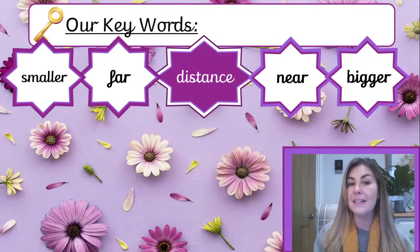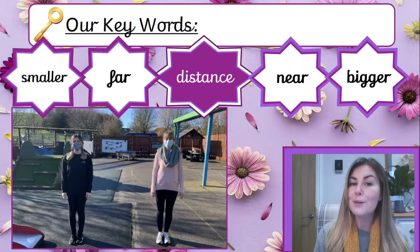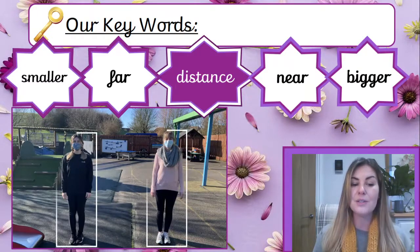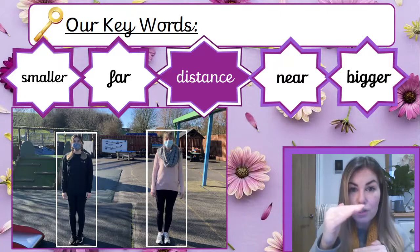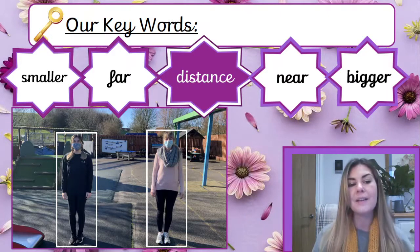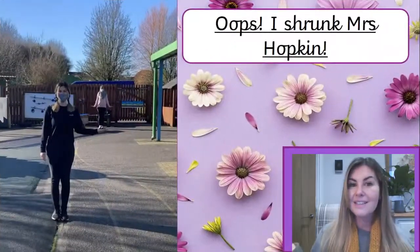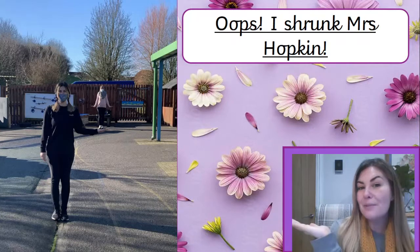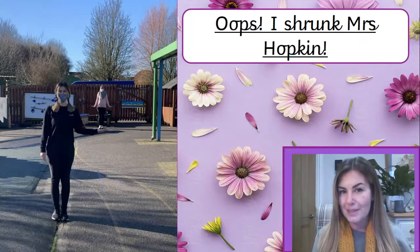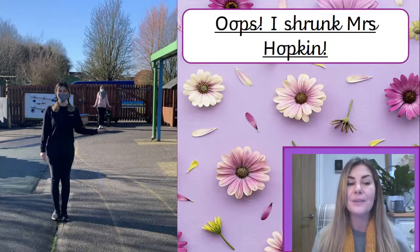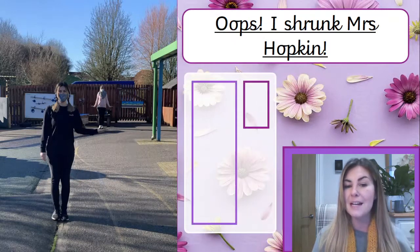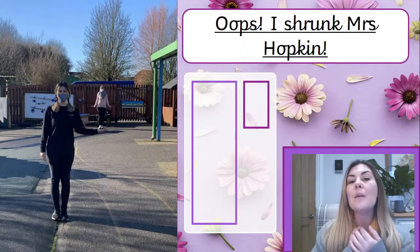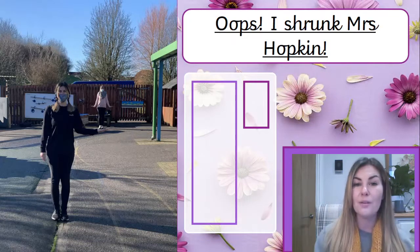Here's a photo of me and Mrs. Hopkin. Yesterday, we discussed the fact that Mrs. Hopkin and I were about the same height. But for this lesson, I have shrunk Mrs. Hopkin — she is now so small she fits into the palm of my hand! Have I really shrunk Mrs. Hopkin? No. What's happened is, even though I look big and Mrs. Hopkin looks small, it's because we're standing in different places. I am near to the camera and Mrs. Hopkin is far away. That's why Mrs. Hopkin looks small and I look big.